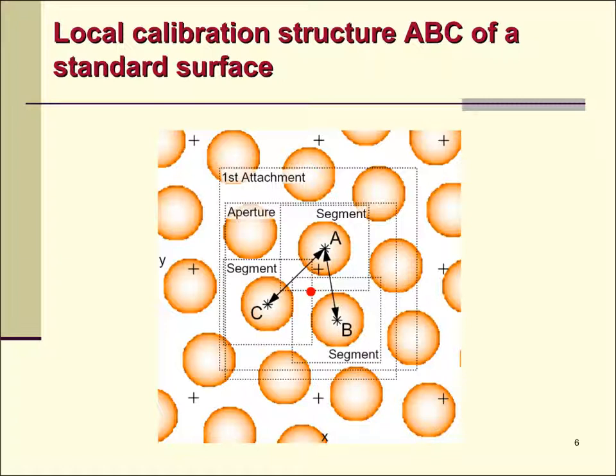Local calibration structure usually consists of three features A, B, and C such that the distances between them are a priori known precisely. Atoms and or interstices of the crystal lattice are used as features.